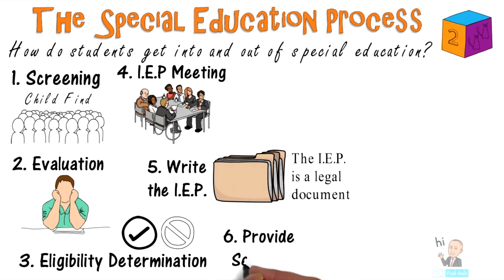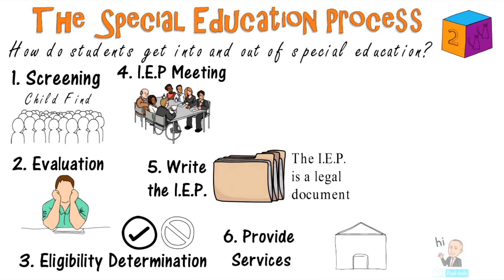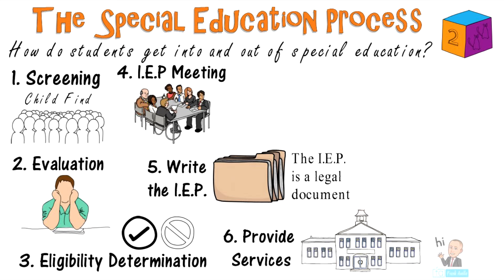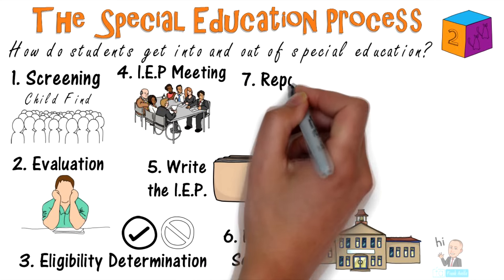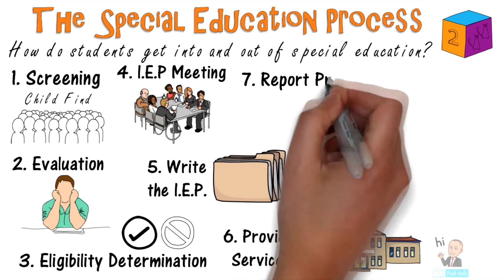The next step is for the school to provide services for the student. The school must follow the written plans in the IEP as well as ensure the student receives the appropriate accommodations on any type of standardized test. Related services must also be provided.